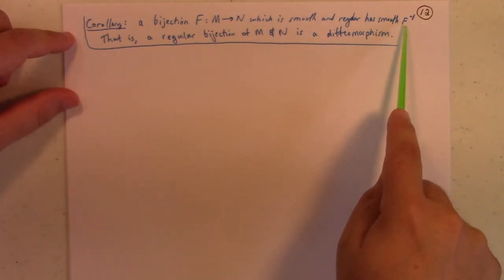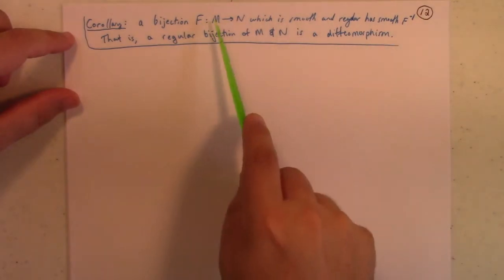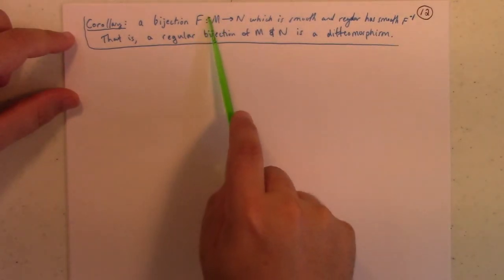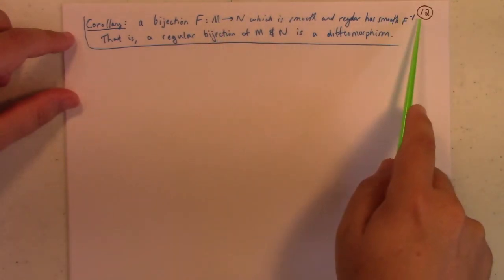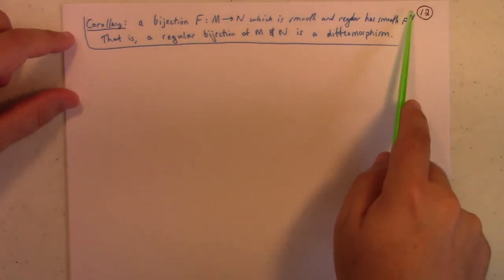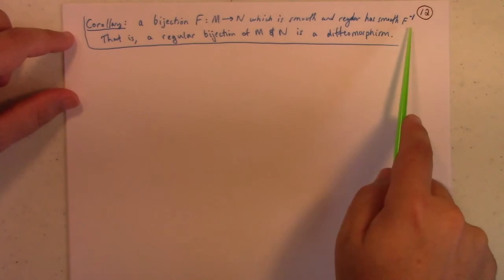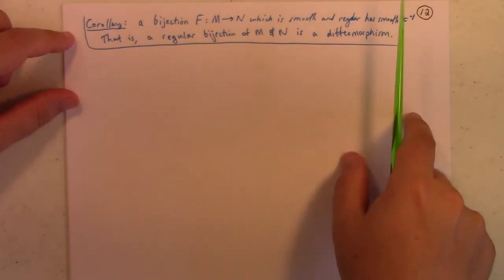But because we get local, if we get the restriction of f to little subdomains of m is smooth, meaning that it has smooth local coordinate representatives, it follows then that you can look at the local coordinate representatives of the inverse and those will just be given to you in terms of those inverses of the restrictions, which are smooth, and hence f inverse is smooth if you sort through it.